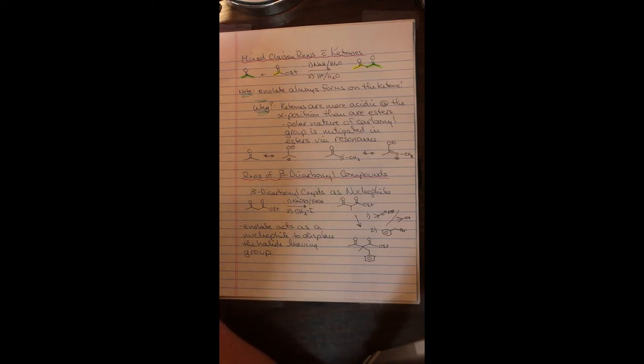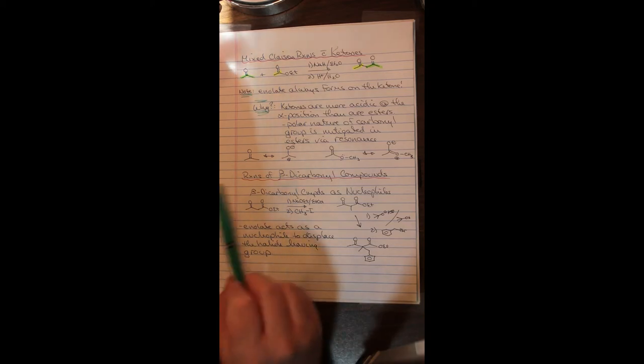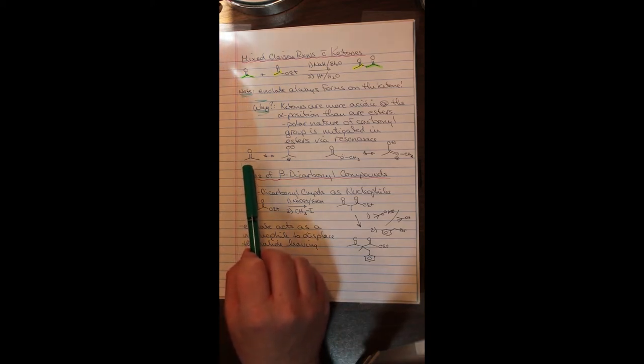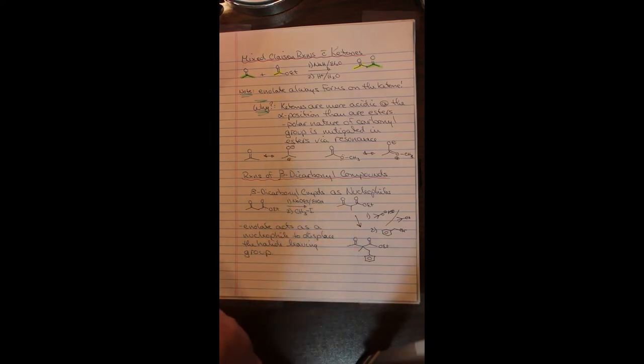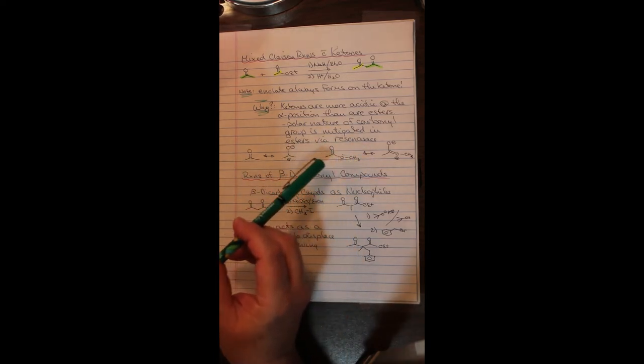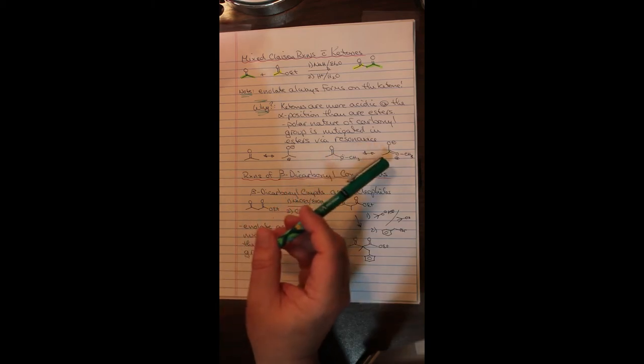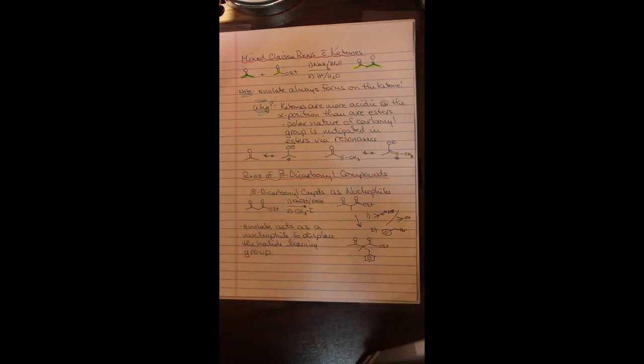We can do this and the reaction works fine, but why does the ketone always form the enolate? And the reason for this is that ketones are considered to be more acidic on the alpha position than are esters. And this is rationalized by the fact that a carbonyl group, if it resonance occurs, the positive charge is fully on the alpha position. Whereas in an ester, if you see resonance, the oxygen could donate lone pair electrons and it makes the carbonyl group less electron withdrawing than it does in a ketone.